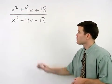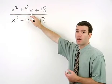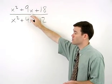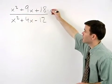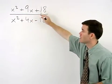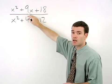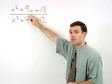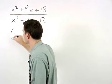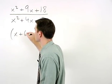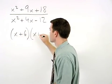So factoring the numerator in this problem, we have a trinomial that factors as the product of two binomials. We're looking for factors of positive 18 that add to positive 9, which are positive 6 and positive 3. So we have x plus 6 times x plus 3.